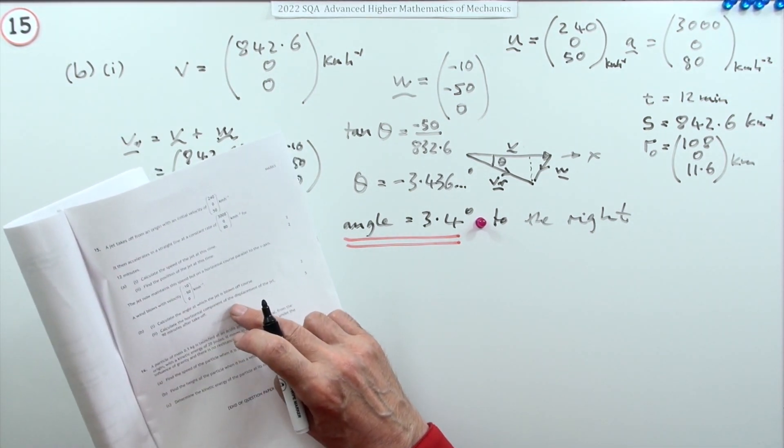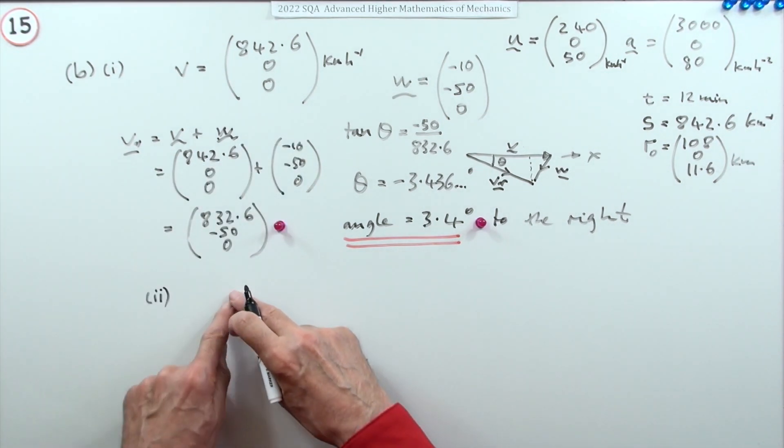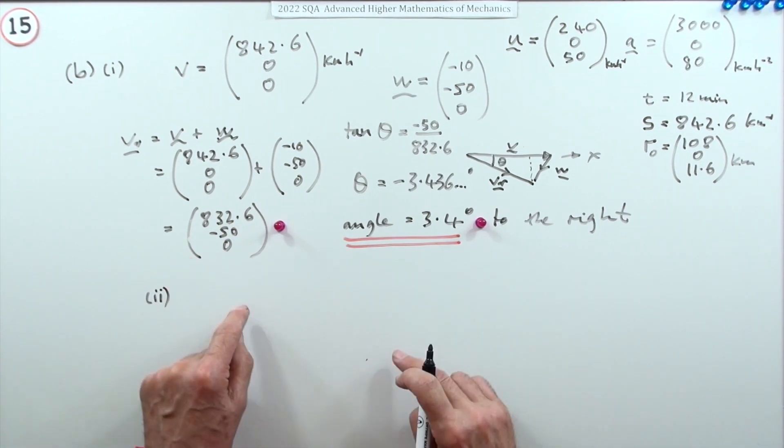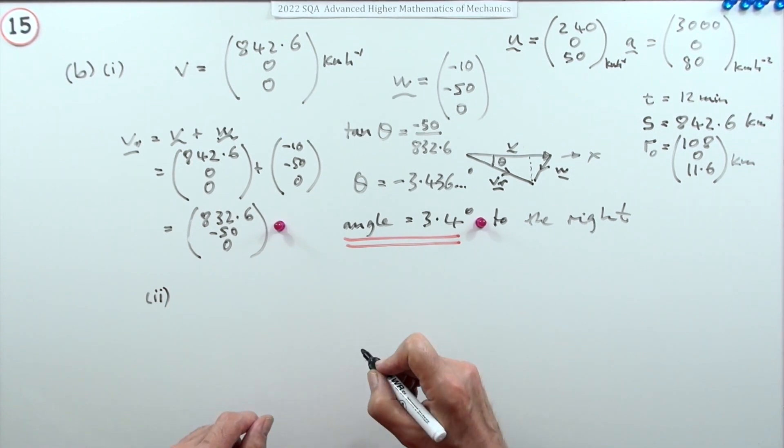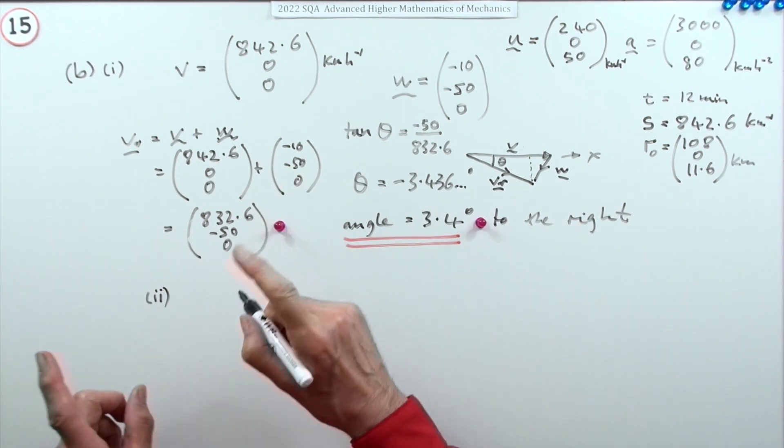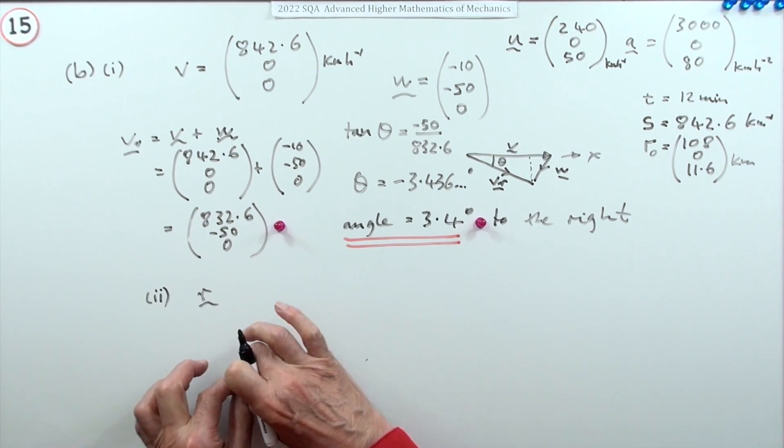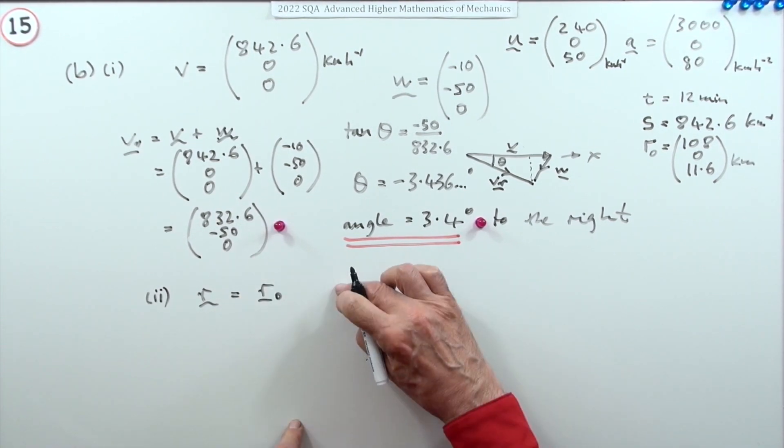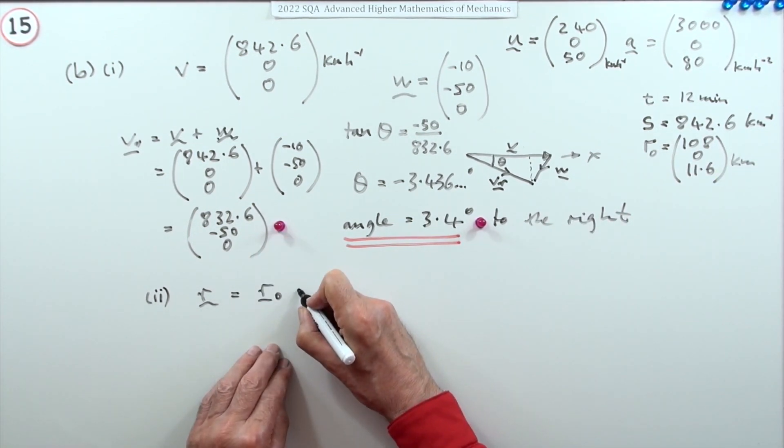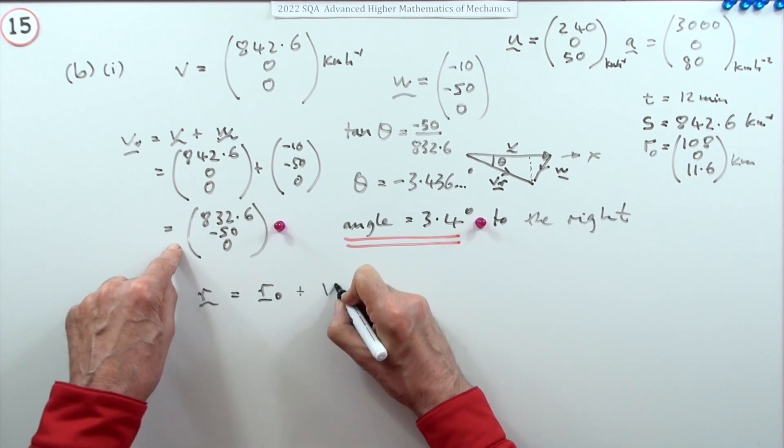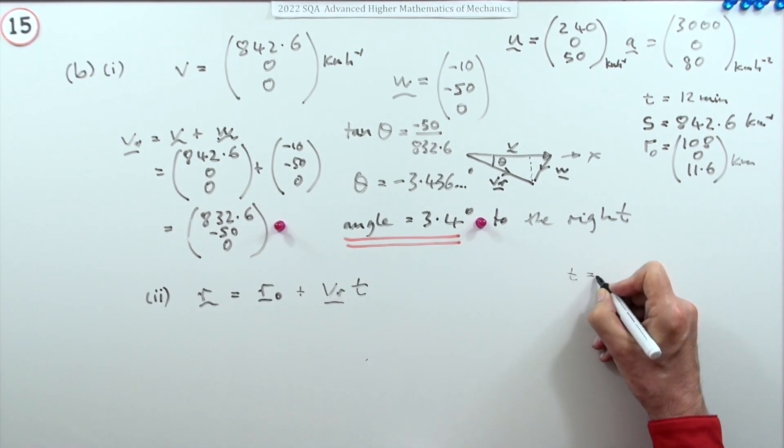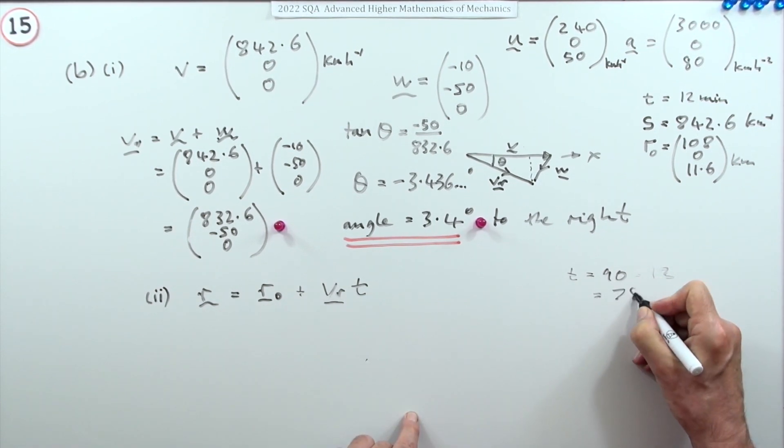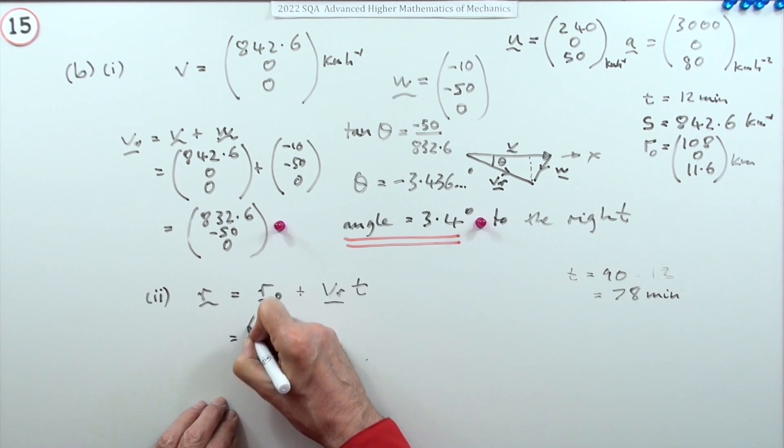Part two: Calculate the horizontal component of the displacement of the jet 90 minutes after takeoff. They've gone a certain distance along, back a certain distance in the y direction, and up, but you only want the horizontal start to finish distance. If you want to work out a distance you use s equals vt, except there's an initial distance. So r will be r naught, the initial position, plus the velocity vr times the time. It said 90 minutes after takeoff, but it took 12 minutes to get to that position, so taking away the 12 leaves 78 minutes.